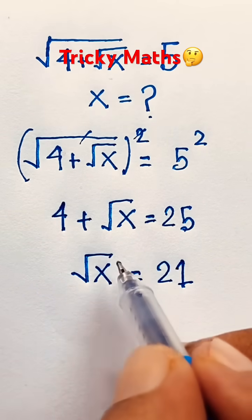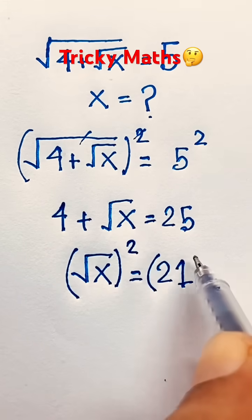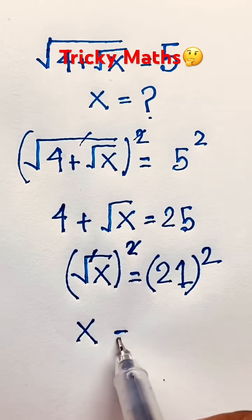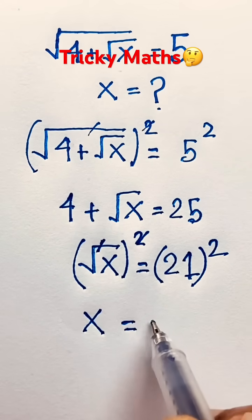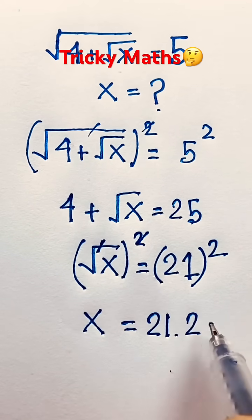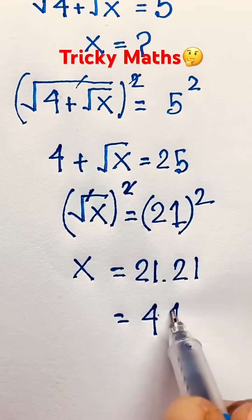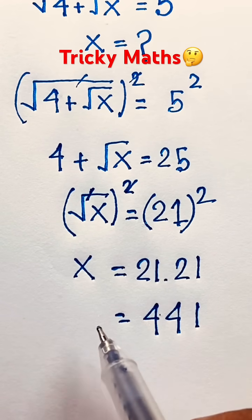Then I use both sides whole square, then square root is canceled. We find out x and 21 whole square, it will be 21 times 21, which is 441.